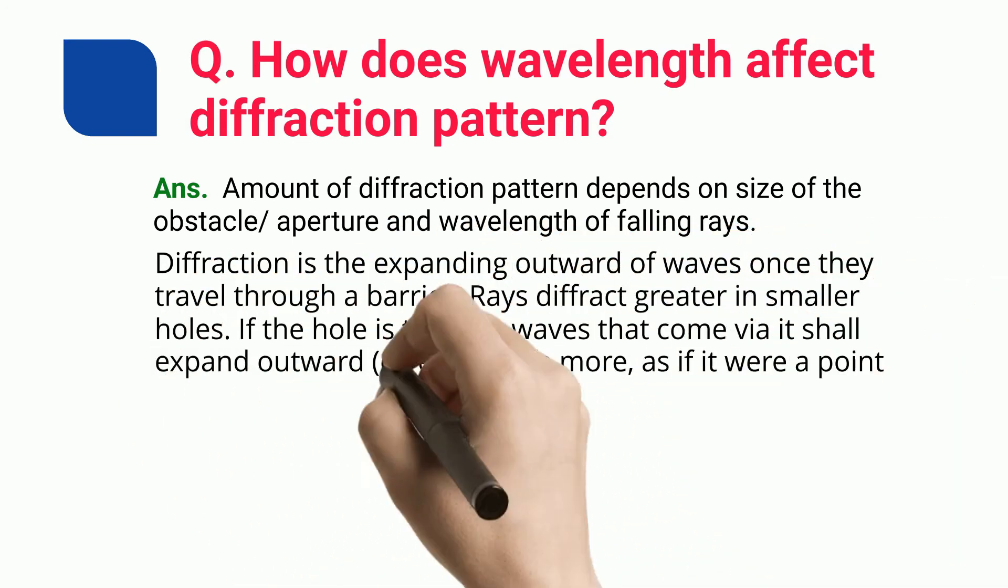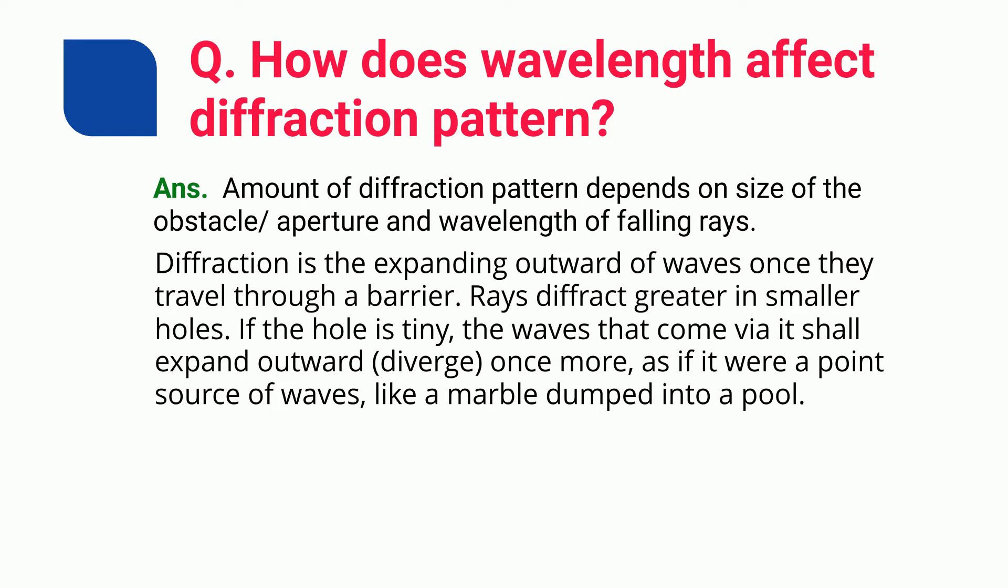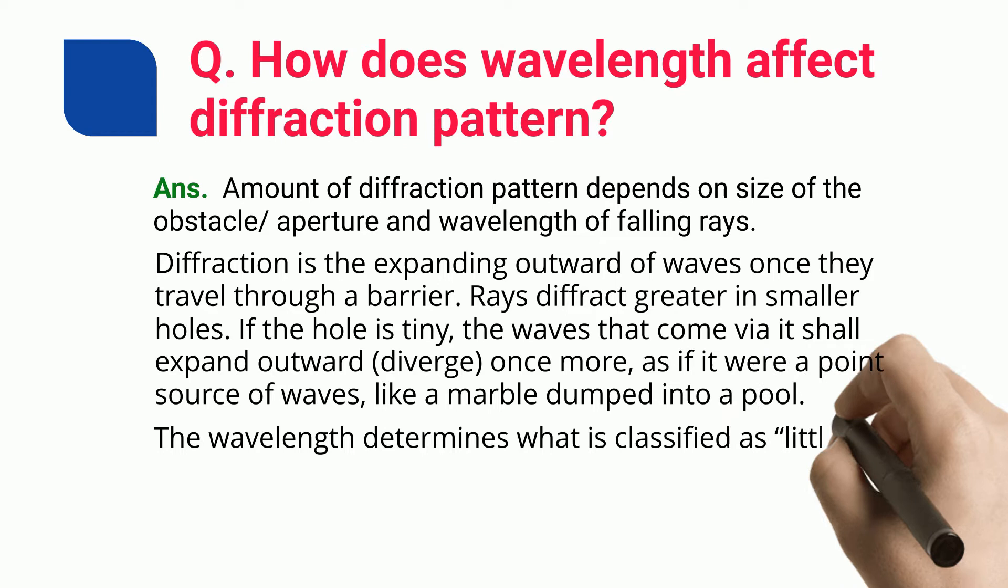If the hole is tiny, the waves that come via it shall expand outward and diverge once more, as if it were a point source of waves, like a marble dumped into a pool. The wavelength determines what is classified as little.